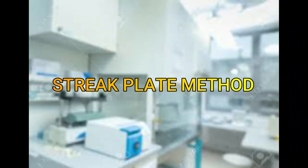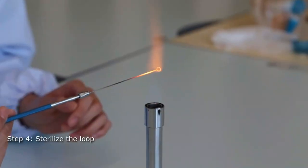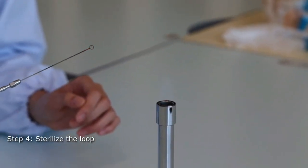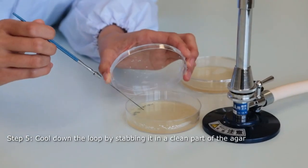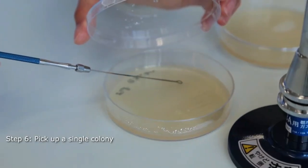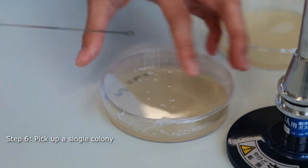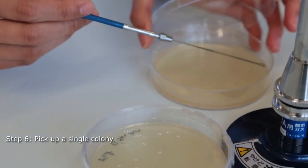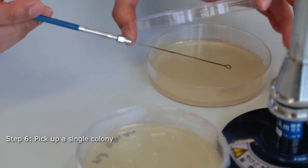Streak plate technique. Firstly, we sterilize the inoculating loop. Then, we cool down the loop by stab it in the agar. Then, we pick the colony on the spread plate that we culture, and we streak on the new MRS agar plate.